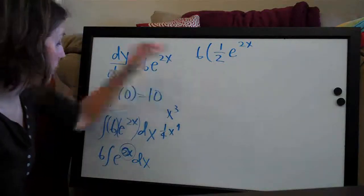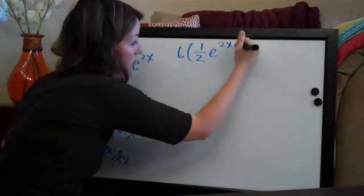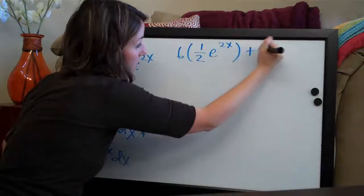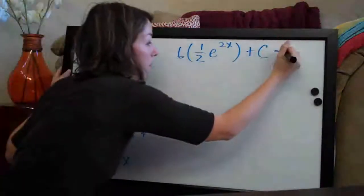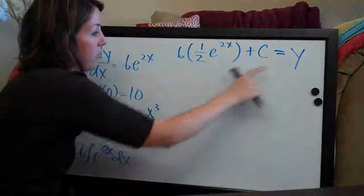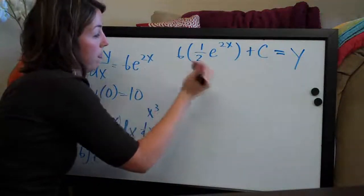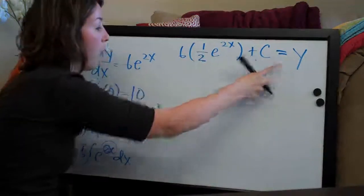So we've done that. We took the integral, that's all we need to do, and then we add c as always because it's a constant. This equals y. Whenever you have an initial value problem and you've taken the integral, you've solved for the function, you can say equals y.